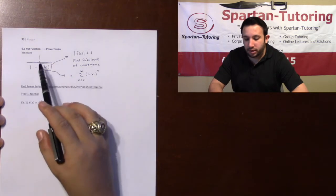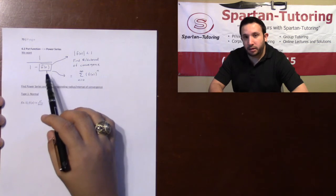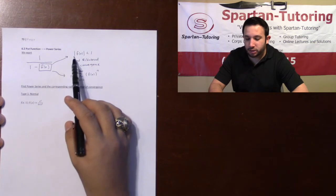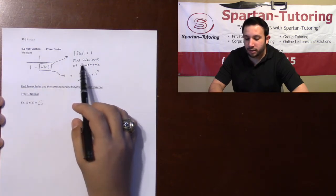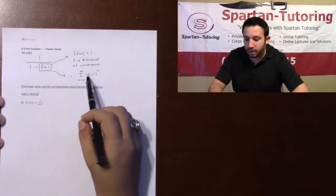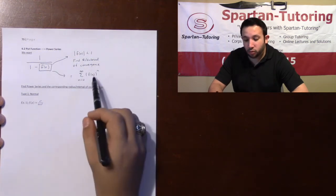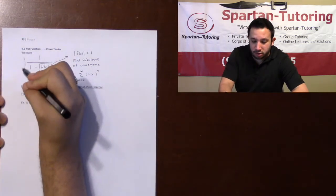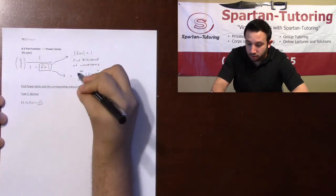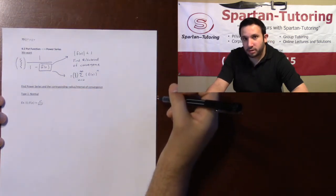The goal is to get a function into the form 1 over 1 minus some function. Once you have it in this form, you can do two things with it. First, you can put it inside absolute values, set it less than one, and find the radius and interval of convergence. The other thing you can do is put it within a series — the sum from n equals zero to infinity of f(x) raised to the n. If you had to do any algebra on the outside to get it into that form, don't forget to multiply that algebra on the outside of your series as well.